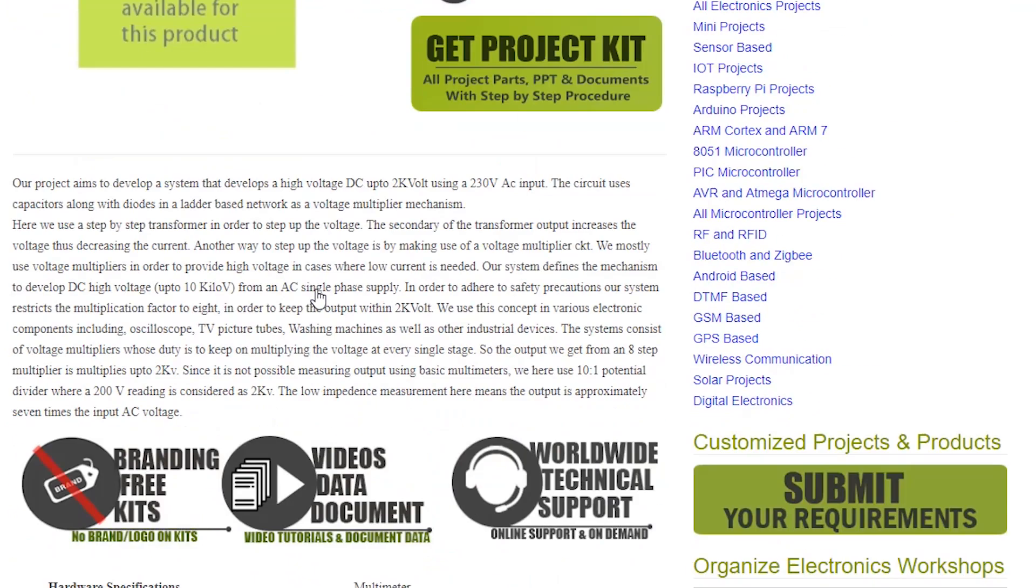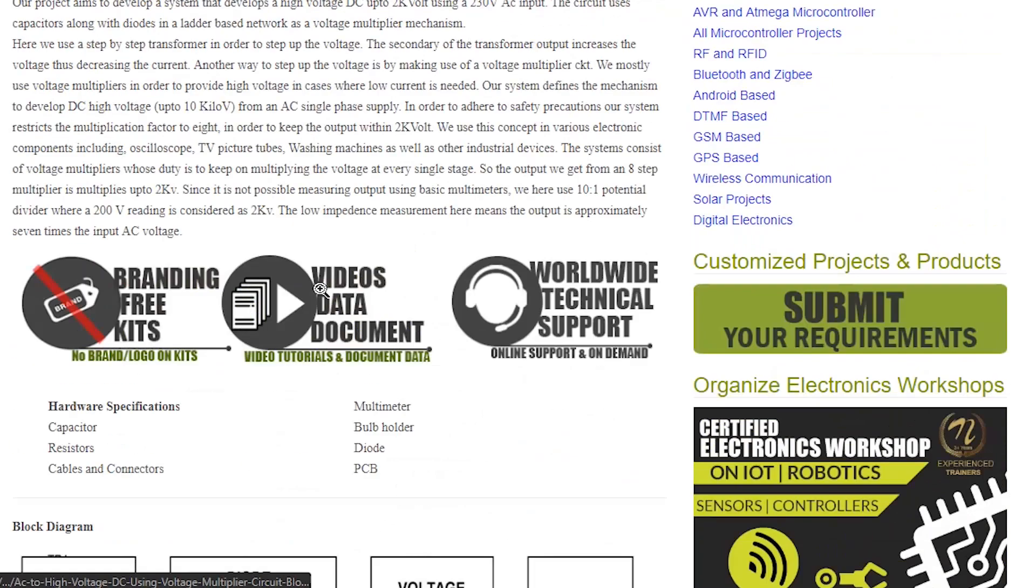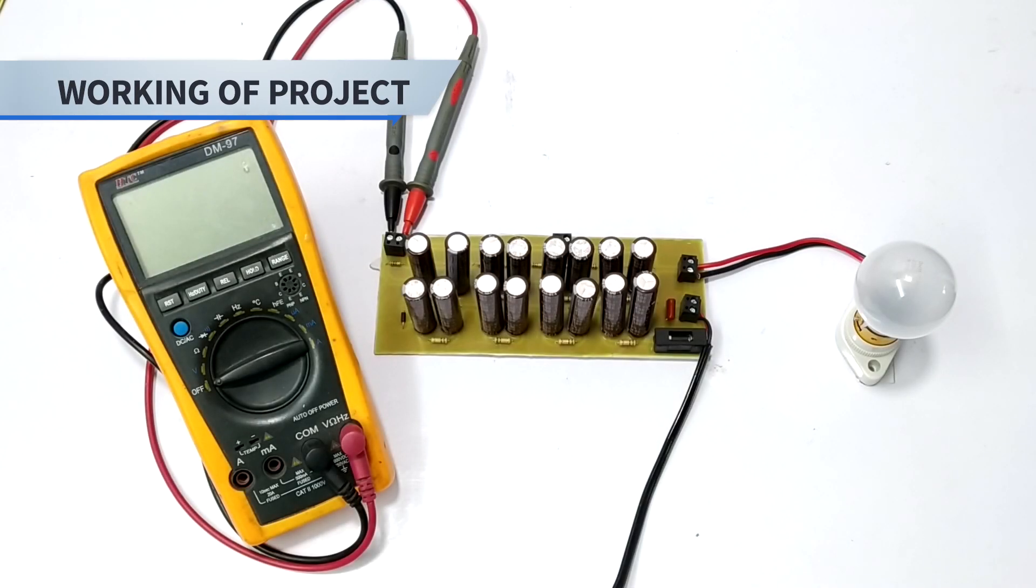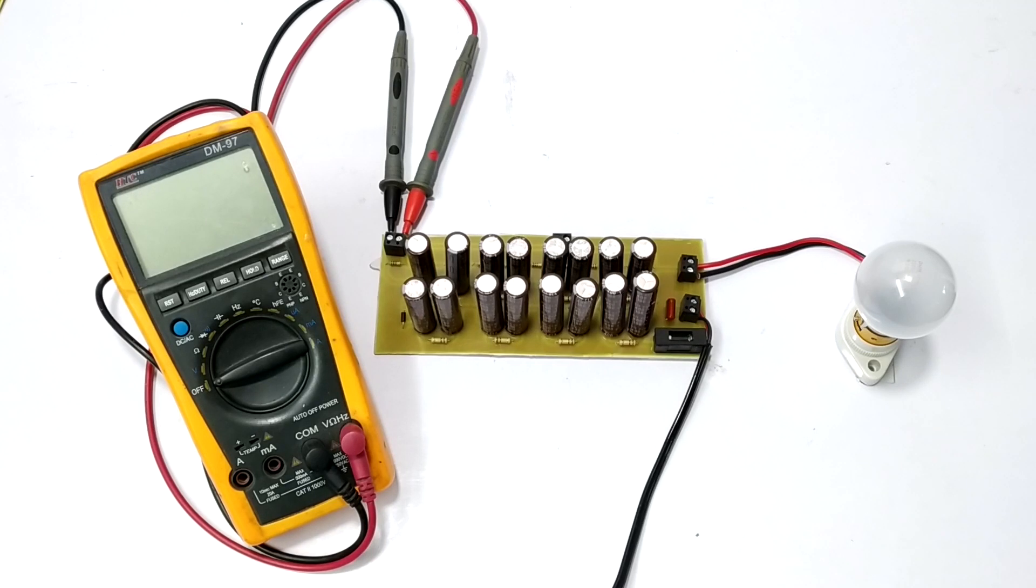Hello guys. Hi guys and welcome to the demonstration of AC to high voltage DC converter using voltage multiplier circuit. This is an innovative system used to convert AC into DC by means of multiplication of voltages.